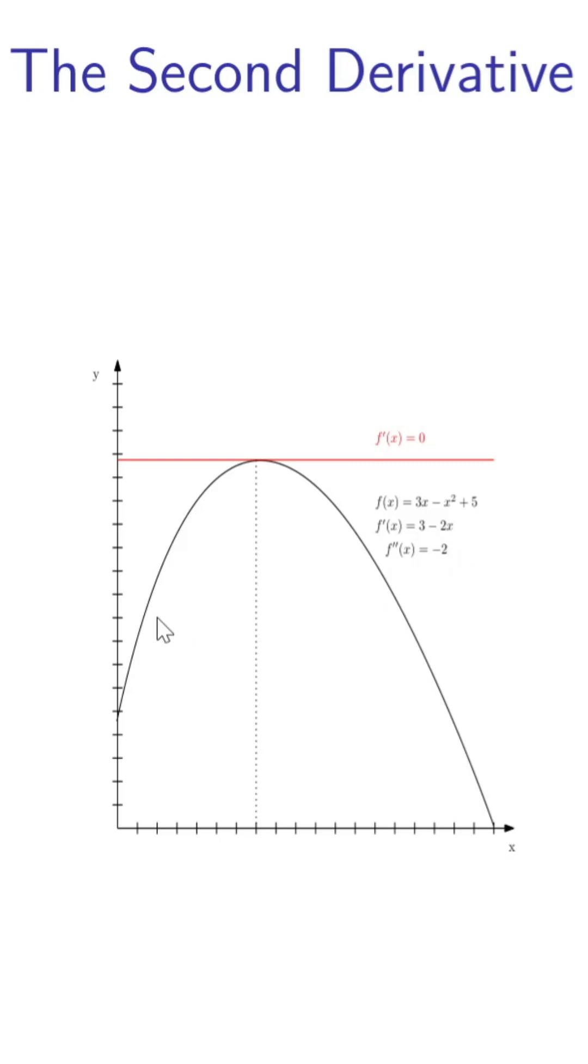What this means is that at any point along the curve, the slope will always decrease. The slope starts out with a high value here, and then the value decreases and decreases further in this area.